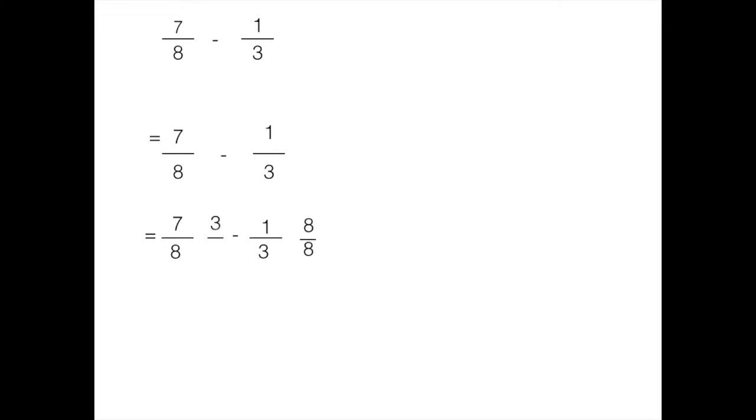If we multiply seven eighths by an equivalent form of one expressed as three thirds, we get twenty one twenty fourths. That means we can now take away eight twenty fourths from our twenty one twenty fourths because we have the same size pieces.